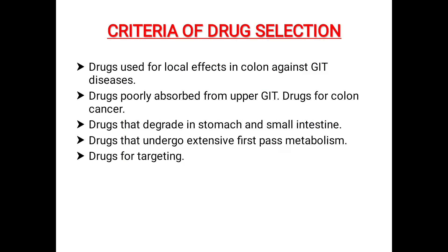Criteria of drug selection. Drugs used for local effects in colon against GIT diseases. Drugs poorly absorbed from upper GIT. Drugs for colon cancer. Drugs that degrade in stomach and small intestine. Drugs that undergo extensive first-pass metabolism. Drugs for targeting.